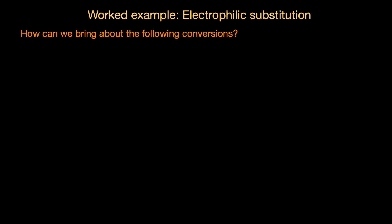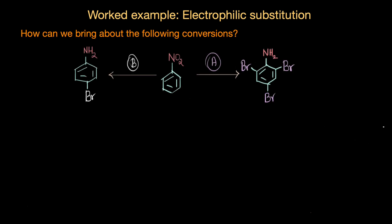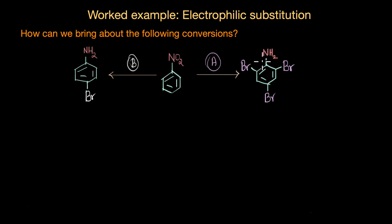Let's look at the first question: how can we bring about the following conversions? We are converting nitrobenzene to 2,4,6-tribromoaniline and to 4-bromoaniline. We are performing bromination here, but the key question is: do we first perform bromination and then convert the nitro group to NH2, or do we first convert the nitro group to NH2 and then perform bromination?